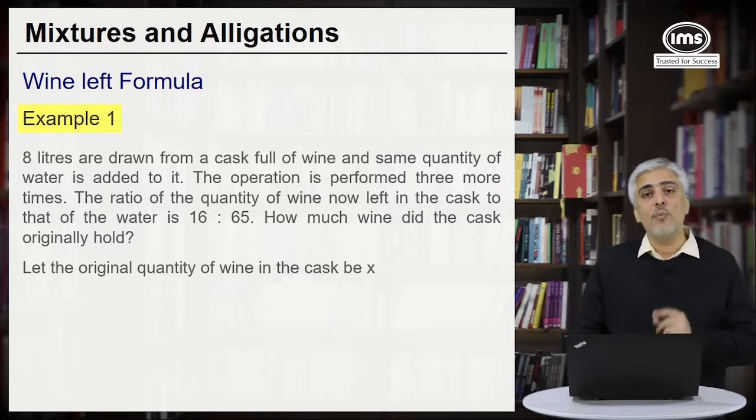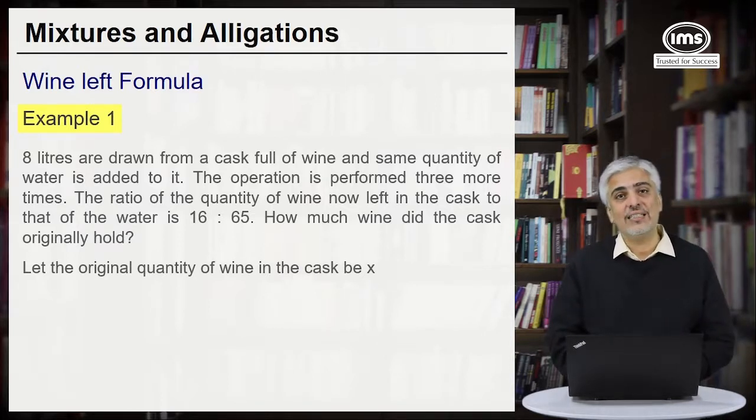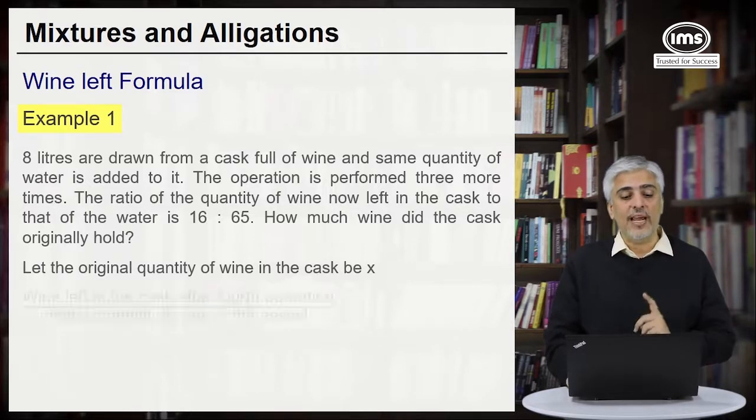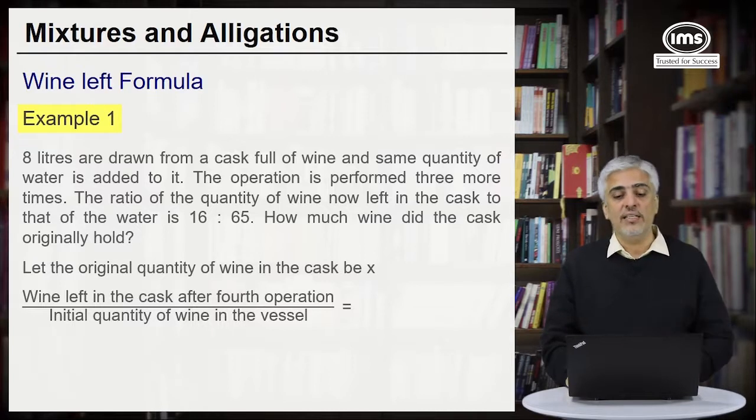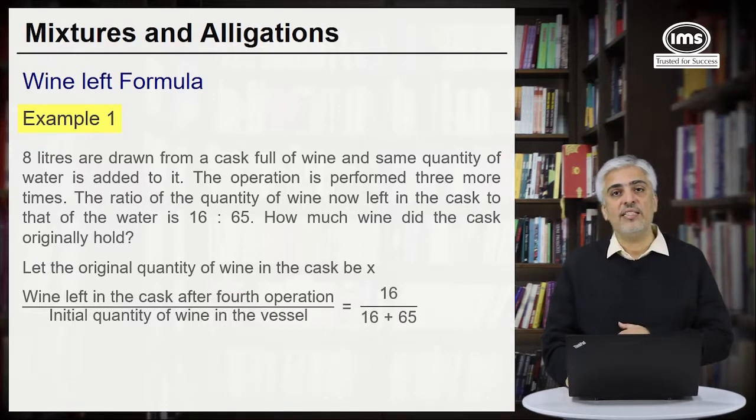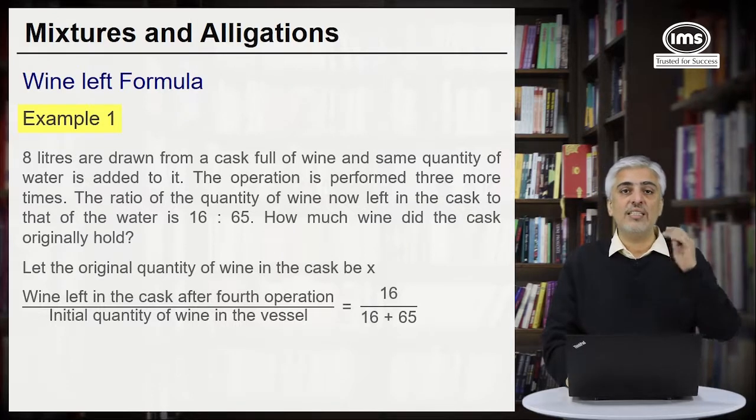So we can start with let the original quantity of wine in the cask be x liters. Now every time how much are you withdrawing? 8 liters. And you are doing that four times. So applying the formula I will get wine left in the cask after the fourth operation upon initial quantity of wine in the vessel can be 16 upon 16 plus 65. Because 16 is the wine left upon 65 is the water.